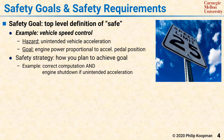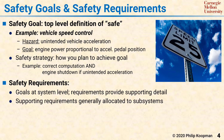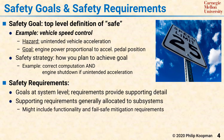Once safety goals have been created, safety requirements are used to fill in the details. Generally, the safety goals relate to the system as a whole, and safety requirements are more broken down so that they can be allocated to particular subsystems or components. Safety requirements can include both functionality and specific failsafe mitigation requirements.